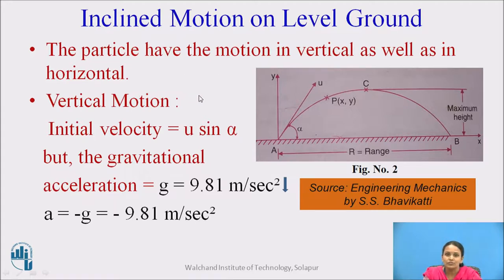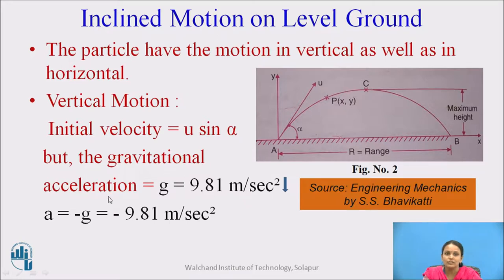First of all, we will calculate the vertical motion. Whenever you consider the vertical motion of a body, the initial velocity is U sine alpha. The gravitational acceleration is 9.81 meters per second squared, acting downward, so here you will get minus 9.81 meters per second squared.